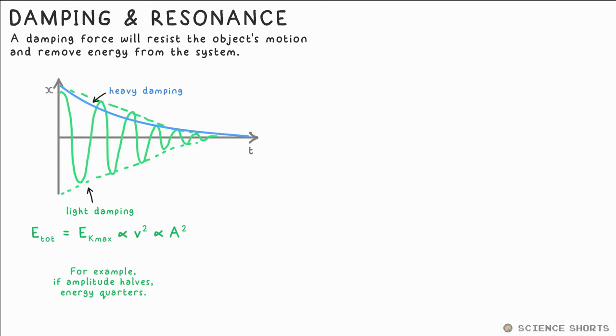If the resistive force is a lot larger, the object won't even get a chance to oscillate. Its displacement will just gradually decrease. This is like if you grab someone on a swing to let them down slowly. We call this heavy damping or over damping.